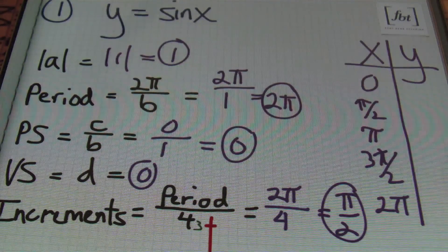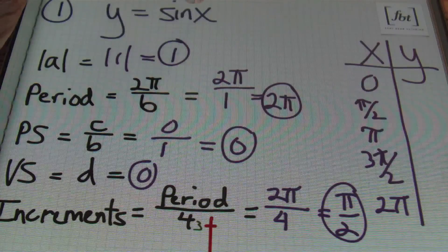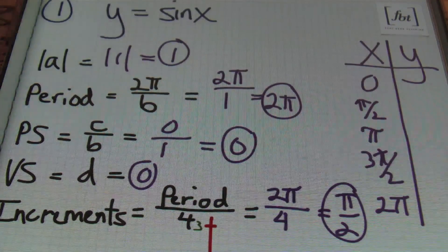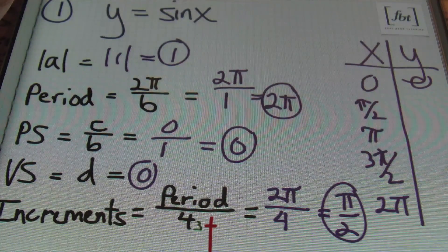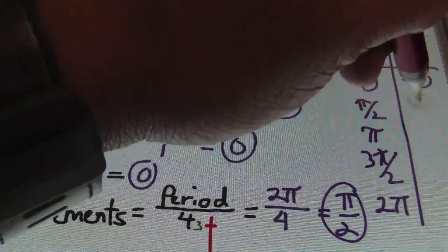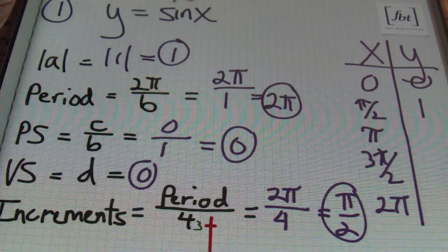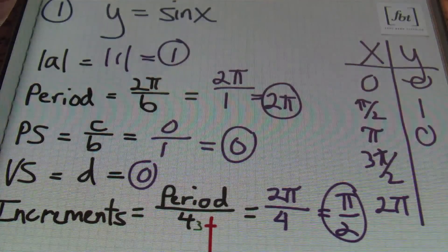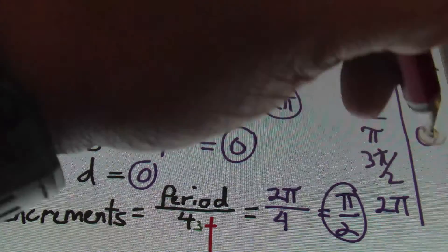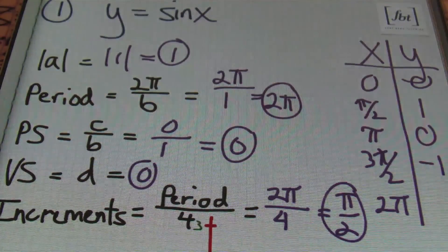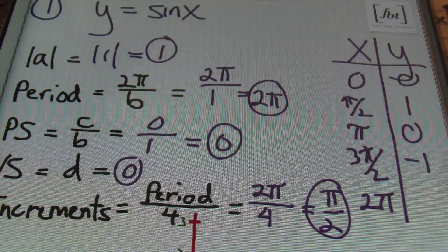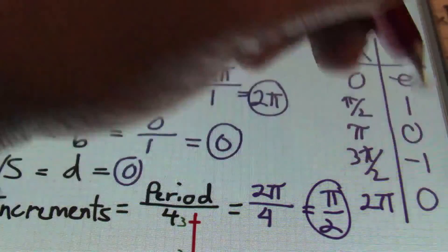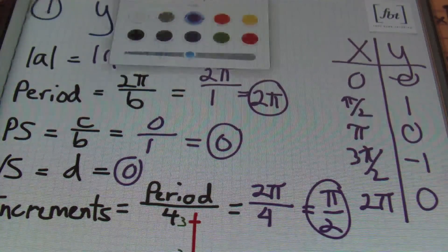Now I'll plug these values into y = sin(x). You'll need to know your sine values either from memorizing the unit circle or using a calculator — my preference is that you be as familiar with the unit circle as possible. Sine of 0 is 0. Sine of π/2 (aka 90°) is 1. Sine of π is 0. Sine of 3π/2 (aka 270°) is negative 1. And sine of 2π is 0. These are the five points I'll plot on the graph.